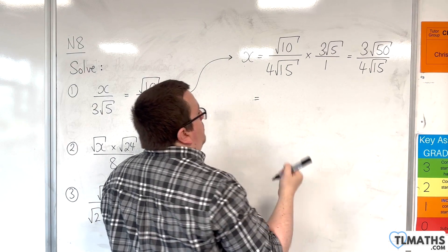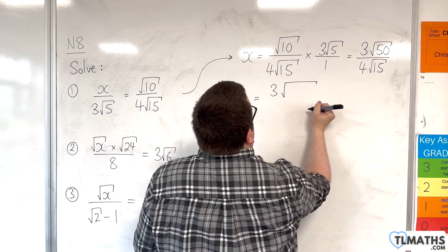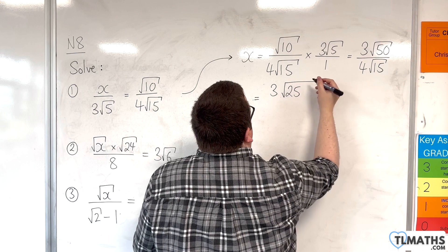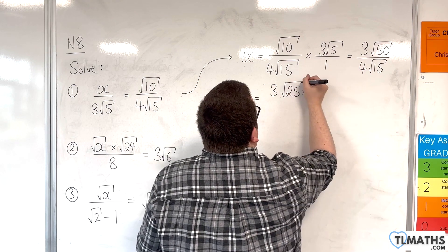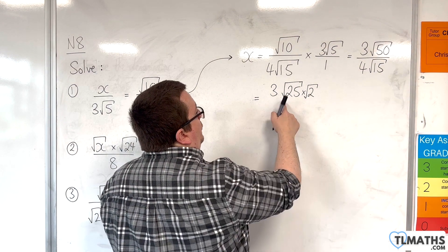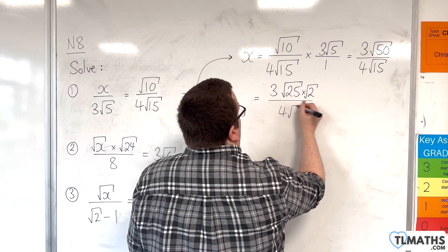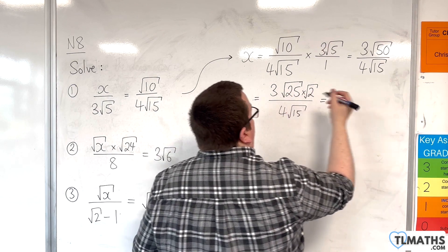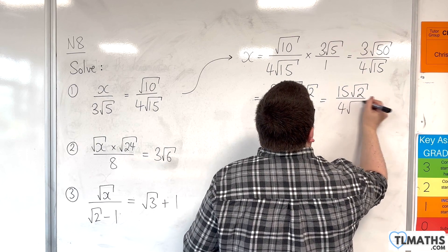√50 is the square root of 25 times the square root of 2. √25 is just 5, so we've got 3 lots of 5, which is 15. So we've got 15√2 over 4√15.